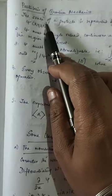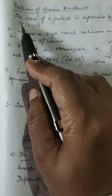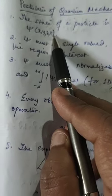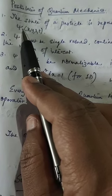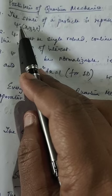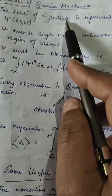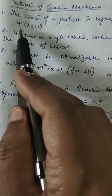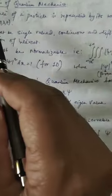The state of a particle is represented by its wave function psi, which is a function of position and time. Psi is a mathematical object that tells you the state of a particle. In statistical mechanics, the state of a particle is given by its position and momentum, but in quantum mechanics all the information about the particle is contained inside psi. So if you want to know the state of a particle, all you need to specify is its wave function psi.